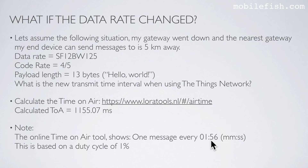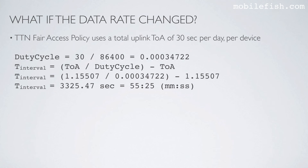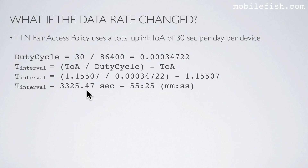Please note this transmit time interval is based on a duty cycle of 1%. The Things Network Fair Access Policy uses a total uplink time on air of 30 seconds per day per device. Again we calculate the duty cycle, and then we calculate the transmit time interval using the time on air from the online tool. This means for every message transmitted we have to wait 55 minutes and 25 seconds before we can transmit again.